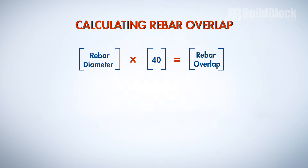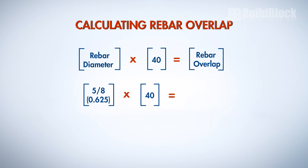For example, if you're using number five rebar, you'll take five-eighths, or 0.625, and multiply it by 40. This gives you a total of 25 inches of overlap each time rebar is spliced.